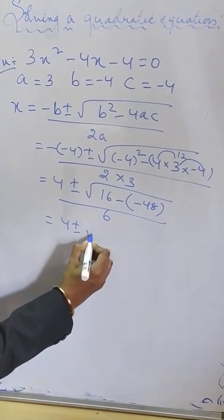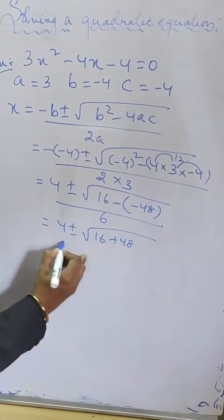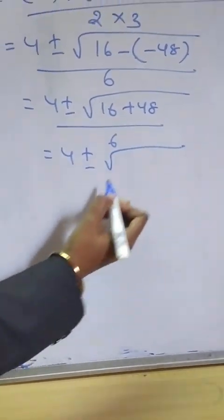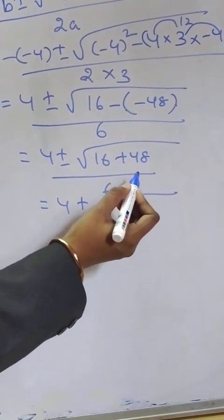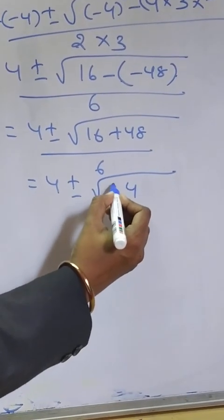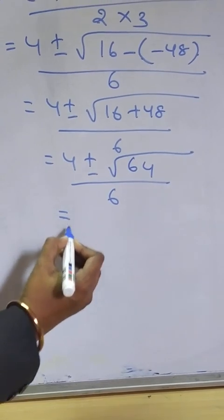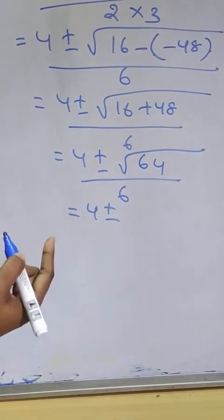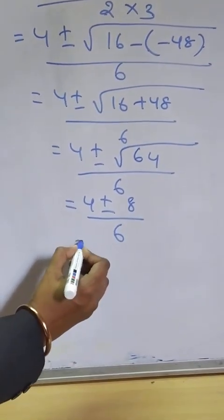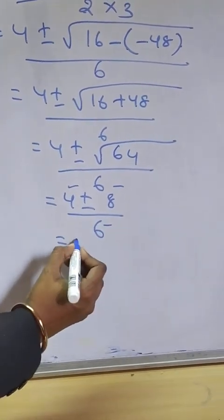Removing the brackets, 16 + 48 = 64. So we get (4 ± √64) / 6, which is (4 ± 8) / 6. All three numbers 4, 8, and 6 have a common factor of 2, so taking 2 as common we get 2(2 ± 4) / 6, which simplifies to (2 ± 4) / 3.